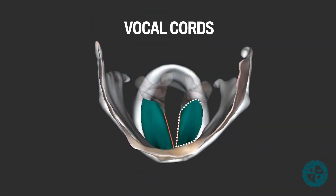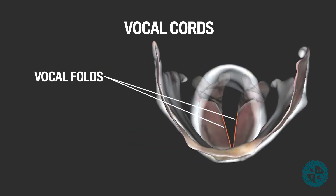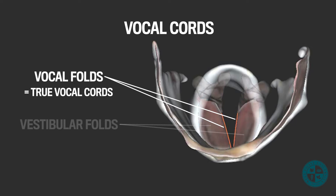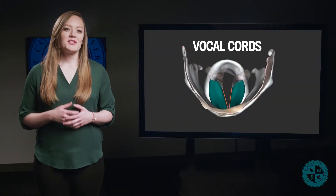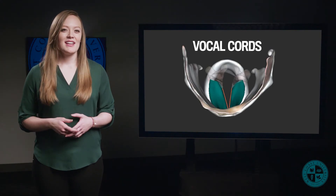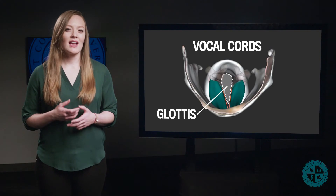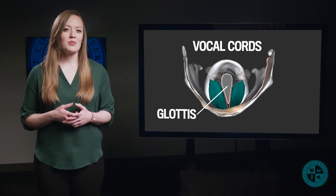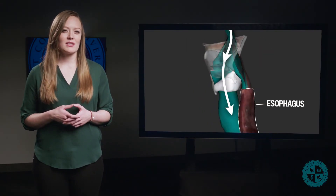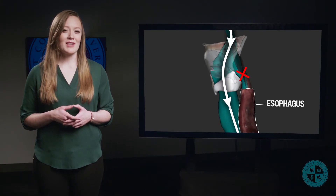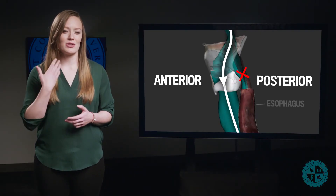Also in the larynx, we will find the vocal cords. The vocal cords are composed of the vocal folds and the vestibular folds. The vocal folds are the true vocal cords because they are involved with the production of sound, and the vestibular folds are the false vocal cords because they do not play a role in sound production. The vocal cords are an important clinical visual when intubating a patient. It is important for clinicians to visualize the glottis and the vocal cords in order to correctly place the intubation tube in the airway and not in the esophagus, which is directly posterior to the larynx and the trachea.